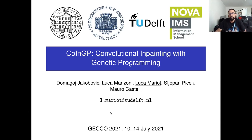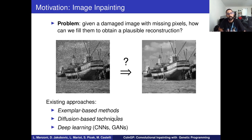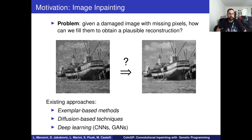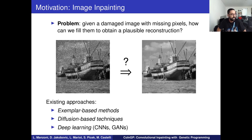The problem we address in this paper is image inpainting, which starts from a given damaged image where there are some missing pixels, and we want to fill those missing pixels in order to have a plausible reconstruction. This task has been extensively investigated in image processing literature, with exemplar-based methods, diffusion-based techniques, and most recently deep learning techniques — especially convolutional neural networks and generative adversarial networks — gaining a lot of popularity.